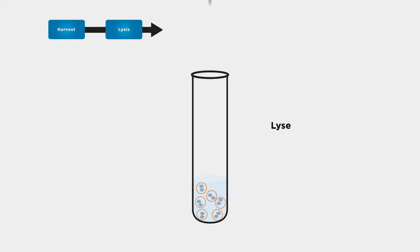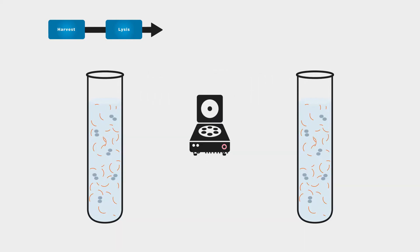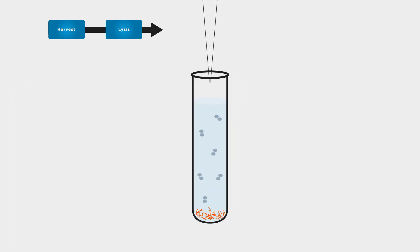Lyse the separated cells by chemical or mechanical shearing to release intracellular virus. Then centrifuge the solution to sediment the heavy cellular fragments and debris, leaving the lighter viral fraction in solution.